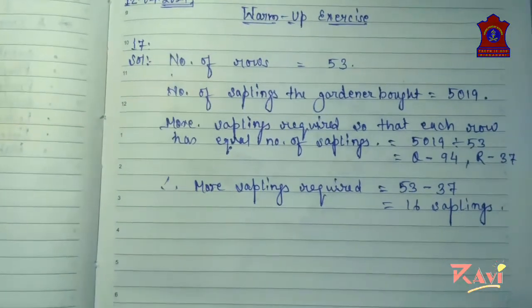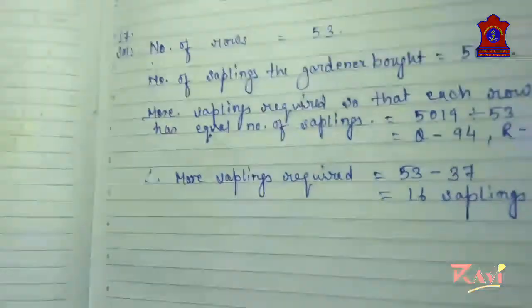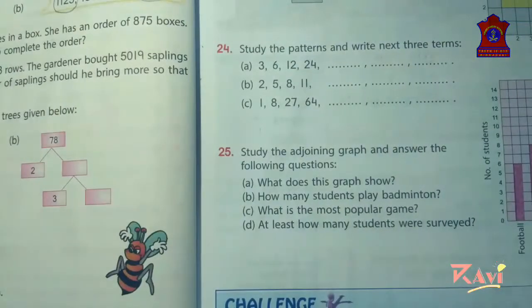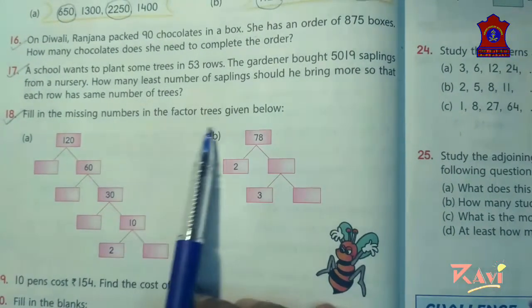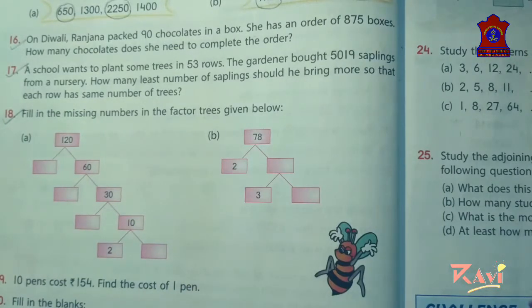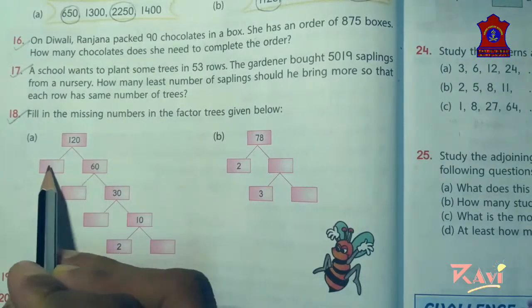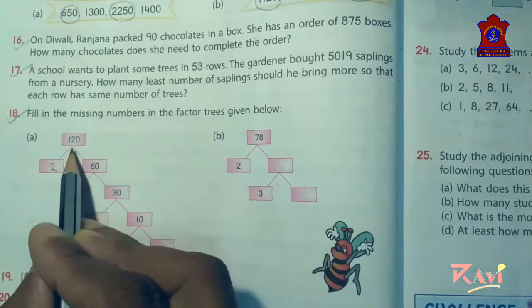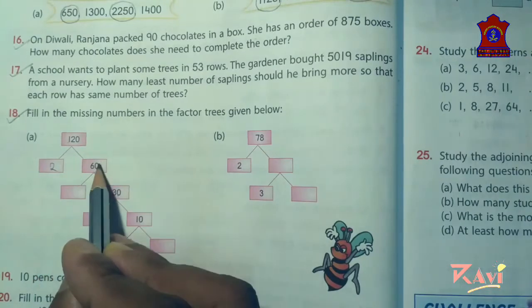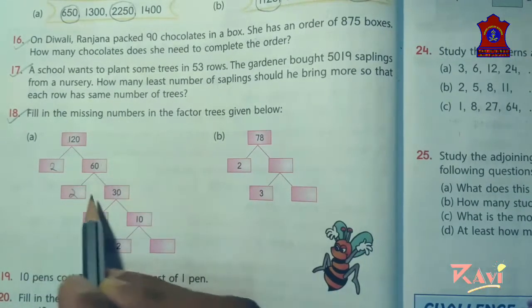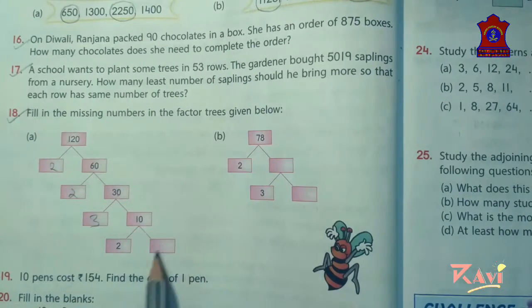Now let's move to question number 18. Fill in the missing numbers in the factor tree given below. See here 120 and the factors of 120 are 60 into 2. What are the factors of 60? 30 into 2 is 60. 10 into 3 makes 30, and 2 into 5 makes 10.